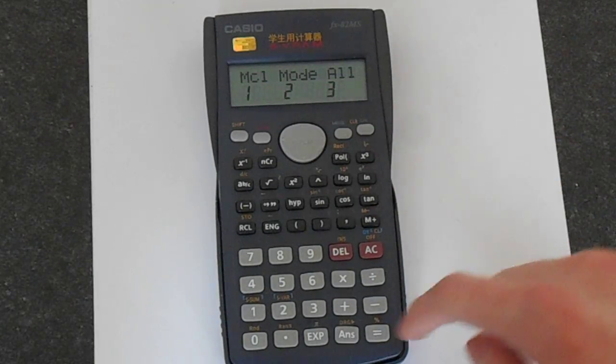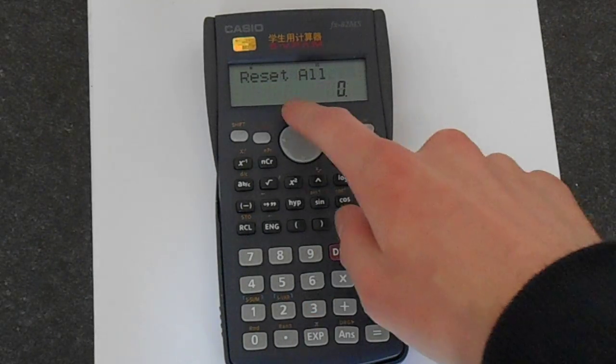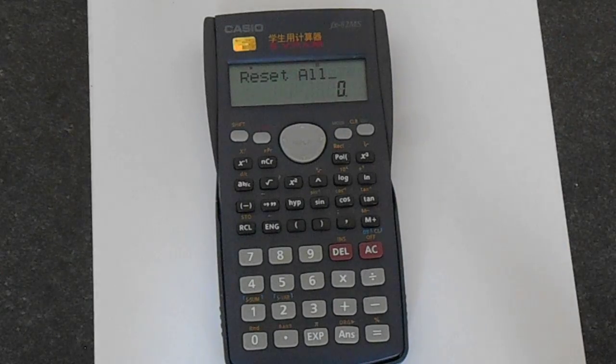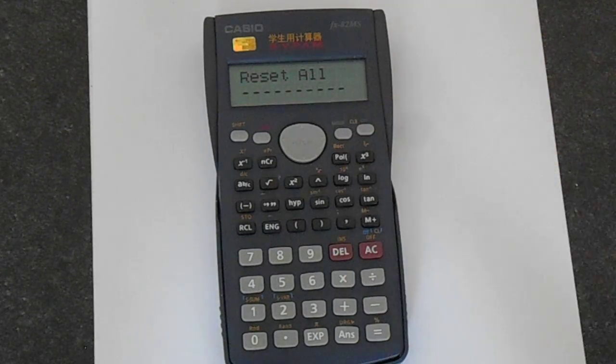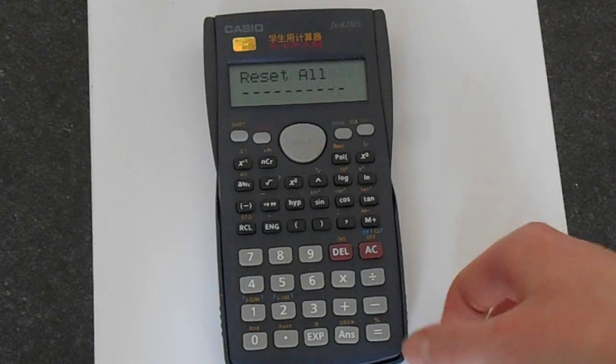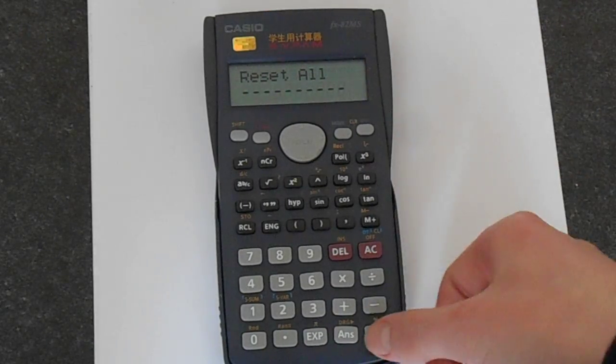So let's press 3 to clear everything and then reset all. We want to just tell the calculator yes, so just press equals. We get this here telling us it's been successful, and if you want to exit this just press equals again.